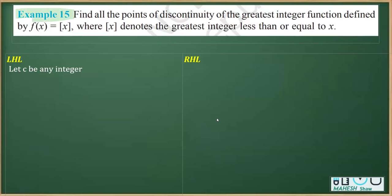This is Example 15 from the chapter on continuity and differentiability. In this question, we have to find all the points of discontinuity of the greatest integer function, which is given by f(x) = [x], where [x] denotes the greatest integer function.